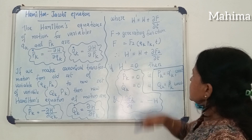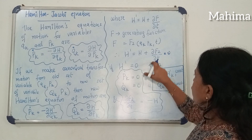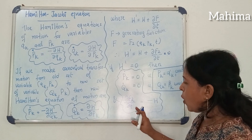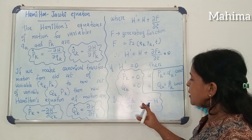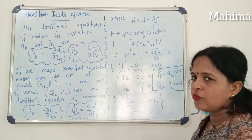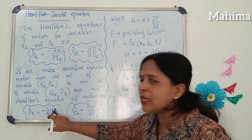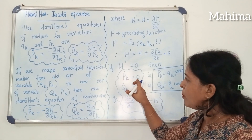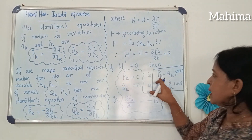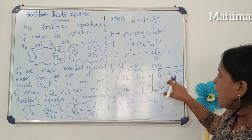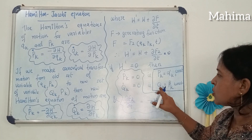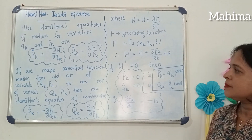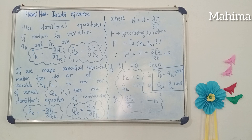When H' is equal to zero, this equation becomes: del F2 by del t is equal to minus H, minus the Hamiltonian. The partial derivative of the generating function is equal to minus the older Hamiltonian function. From this, Pk dot is equal to zero because H' is equal to zero. Any function whose derivative with respect to time is zero means that function is a constant, so Pk is equal to a constant alpha k, and Qk dot equals zero means Qk is also a constant beta k.